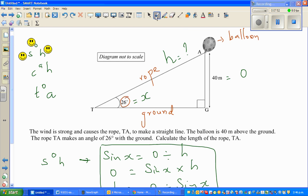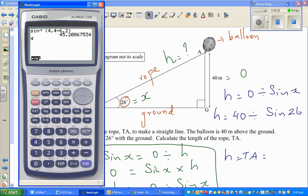Using this formula, I can say H is O divided by sine of X, or sine X. So just substitute the value: O is 40 divided by sine, and what is X? 26. So your H or TA is—again use the calculator—40 divided by sine 26, which is 91 meters.